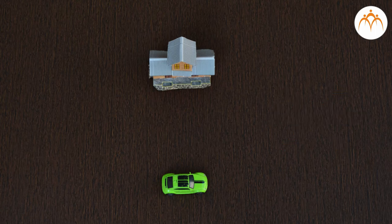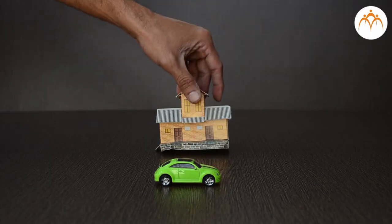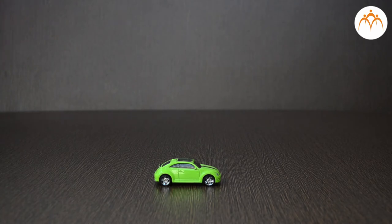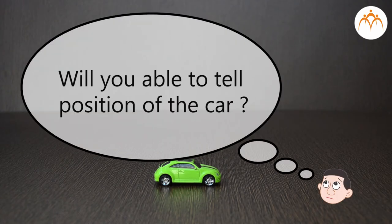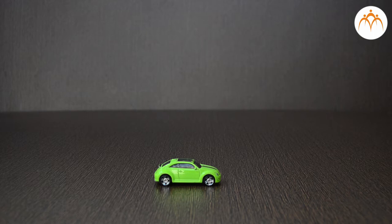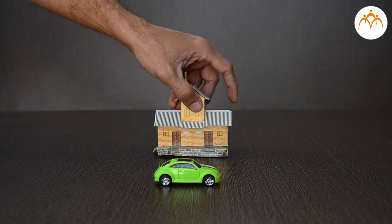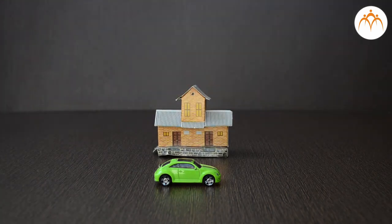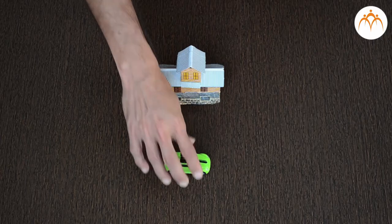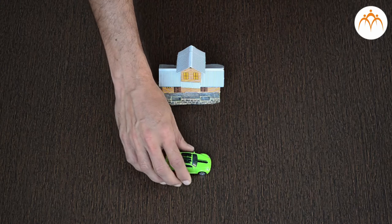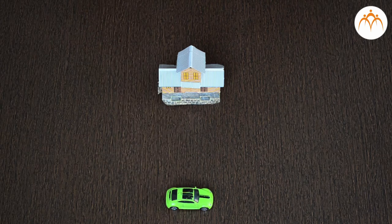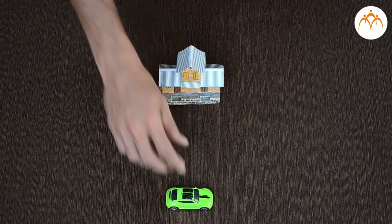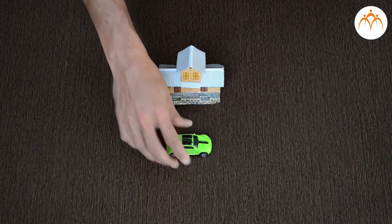Let me show you. What will happen if I remove the house from the scene? Will you be able to tell the position of the car? No. The house, our reference point, is required. Let us keep it back. How about distance? If I move the car here or there, it is still in front of the house. I need the distance to specify its exact position.